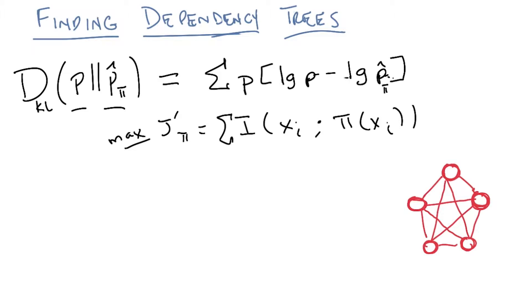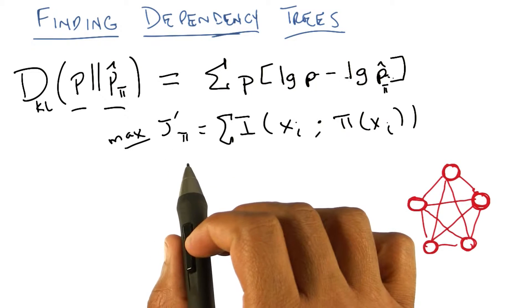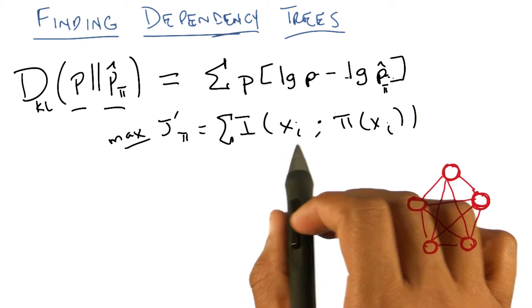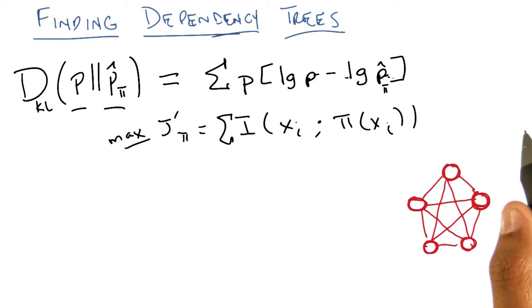Alright Michael, see if you can tell me where we're going here. As a reminder, I've erased some stuff to make room. We're trying to maximize this cost function j prime sub pi, which is basically the sum of the mutual information between every single feature and its parents. I want to point out that actually induces a graph, in fact a fully connected graph.